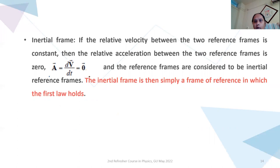Velocity can change due to change in its magnitude or due to change in its direction or change in both. The next part of the Newton's first law was it was giving inertial frame. So let us see what is inertial frame. If the relative velocity between the two reference frames is constant, then obviously relative acceleration between these two reference frames will be zero. And in general, we denote acceleration by either small a or capital A, which is rate of change of velocity. So dv by dt is equal to zero. And the reference frames are considered to be inertial reference frames. That is what we wanted to define. So what in simple words I can say, the inertial frame is the frame of reference in which first law holds.